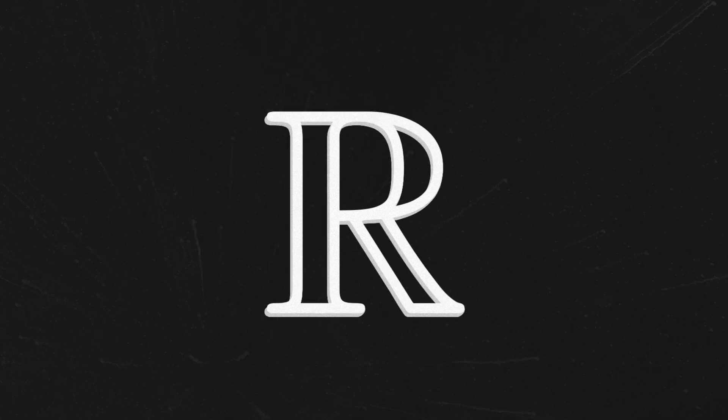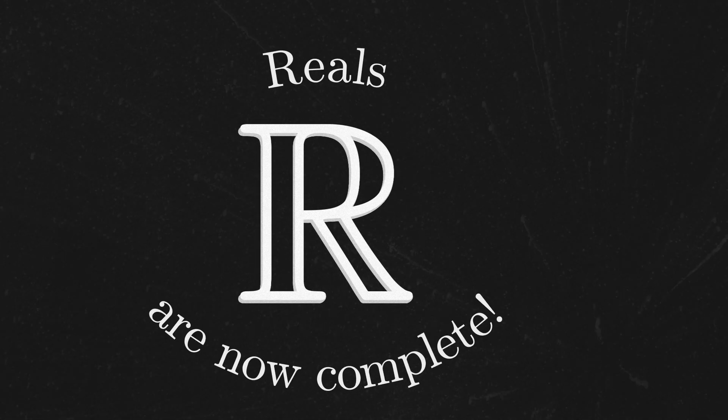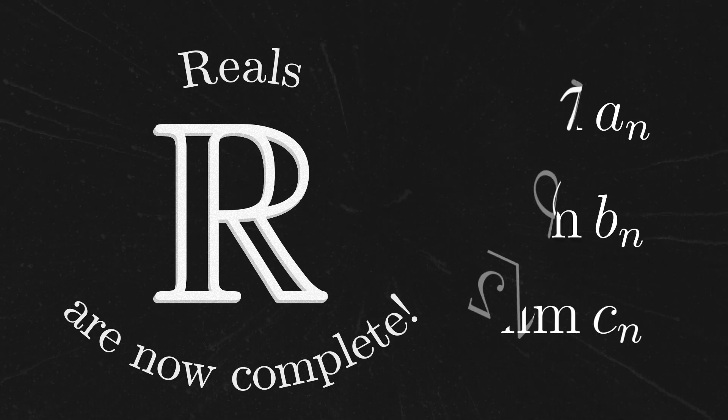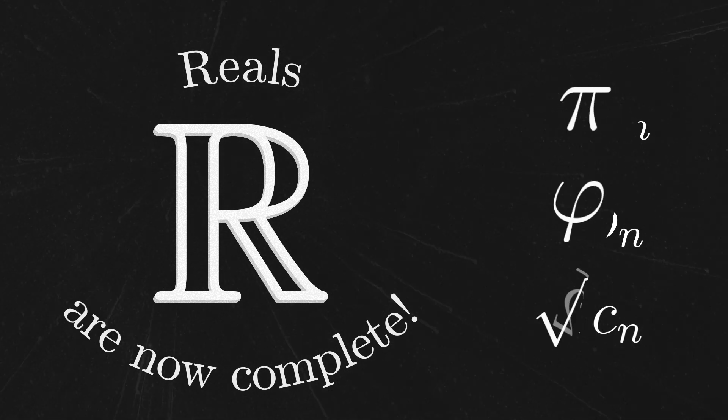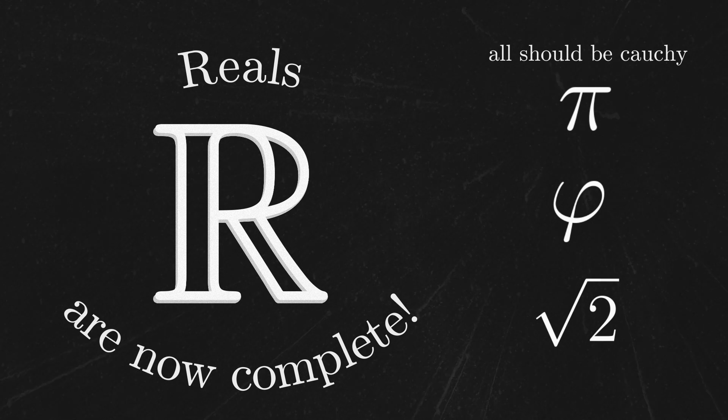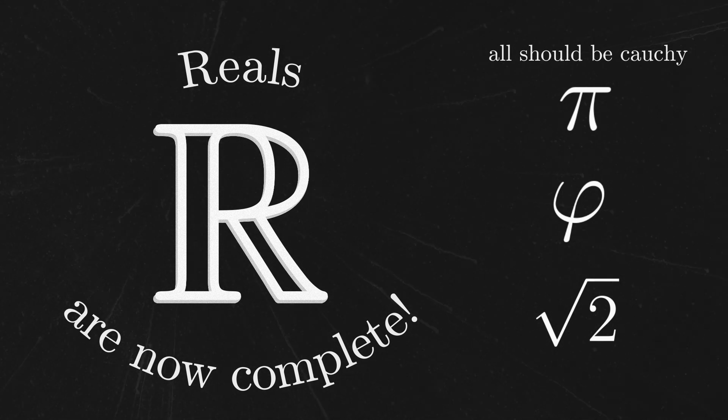It's tempting to think that we're essentially done. We realize that real numbers can all be represented by sequences of rational numbers, and that the terms of those sequences should get successfully closer to each other. So we should just define the real numbers to be the set of all Cauchy sequences, right? Well, there's an issue here.